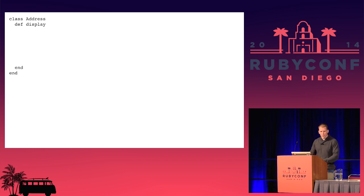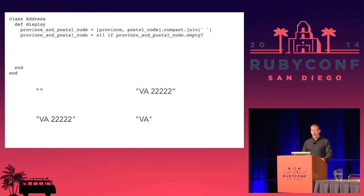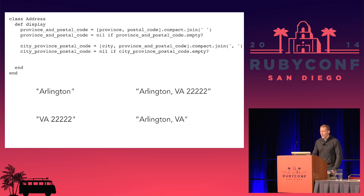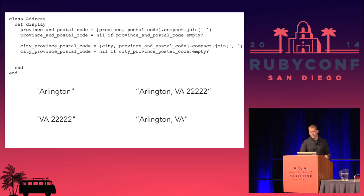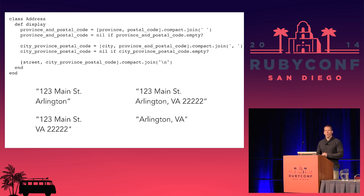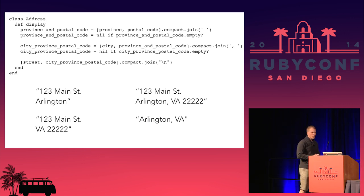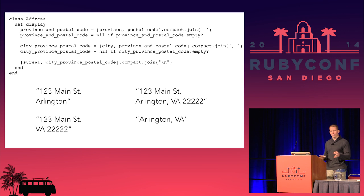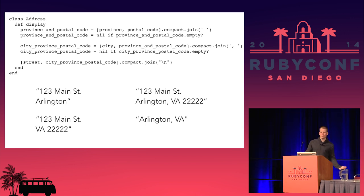I want to fix the bug, so let's clean up the code. Here's what we'd get in different scenarios — some pieces present, some missing. We add province and postal code together, compact them to remove nil values, and join with a space. If you have a city, we add a comma afterward and do the rest. The street goes in, and if there is a street, we put in a carriage return.